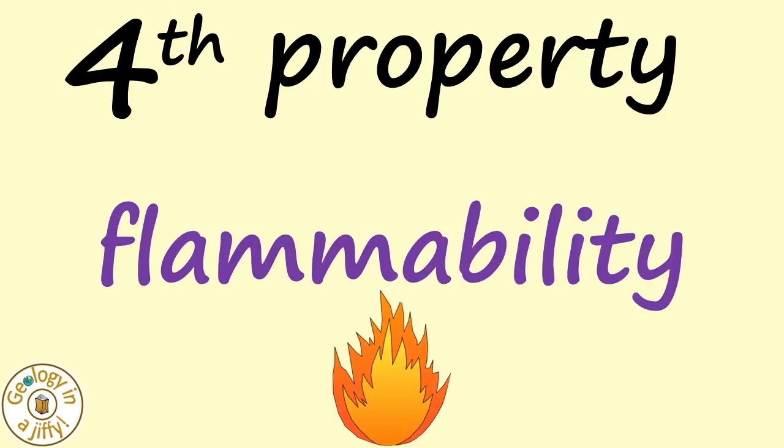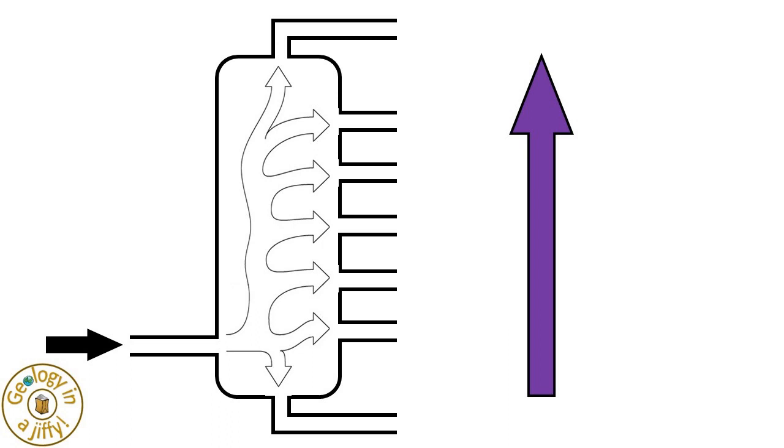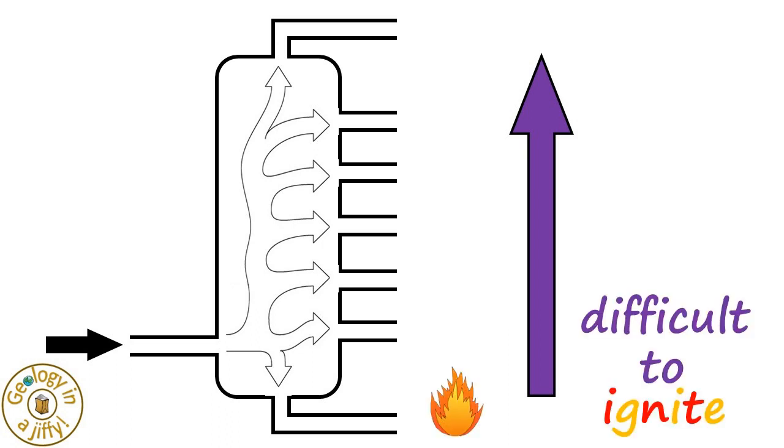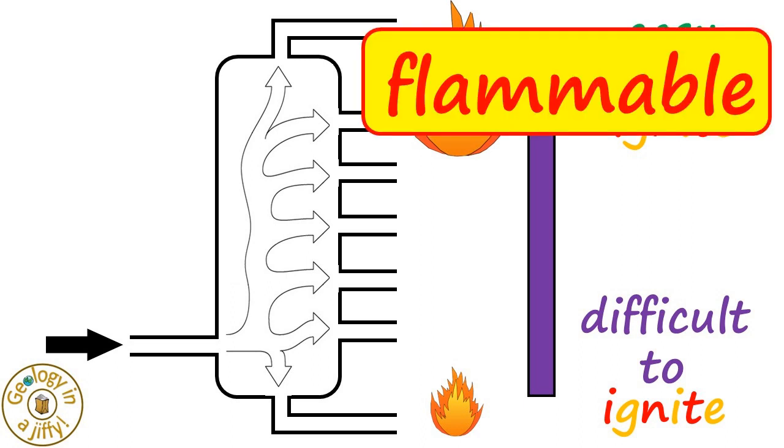The fourth property is the flammability of the fraction, this being the ability to ignite when heated in oxygen. As we go up the tower, the lower fractions at the base of the tower are difficult to ignite, and the fractions at the top of the tower are much easier to ignite, so we say they are very flammable.